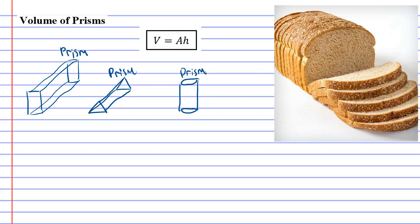We see prisms all the time. A loaf of bread is a really good example of a prism. And what you'll notice is that every slice of bread is the same size, or almost the same size. If it was a perfect prism, they would be.